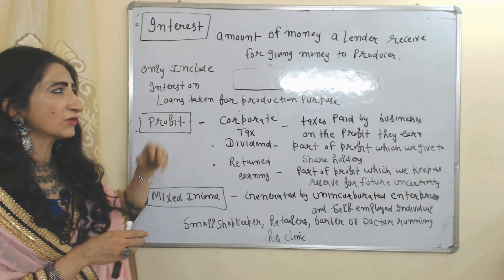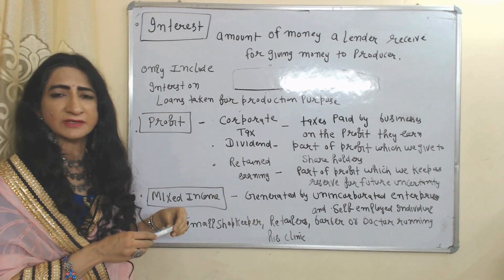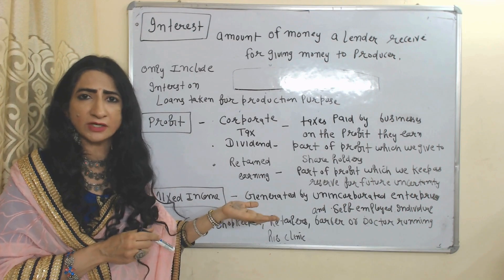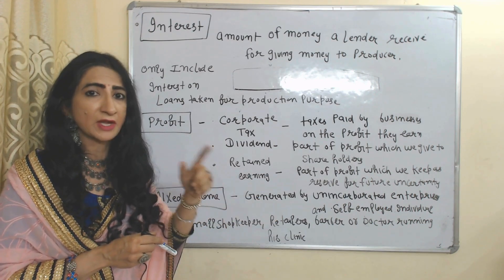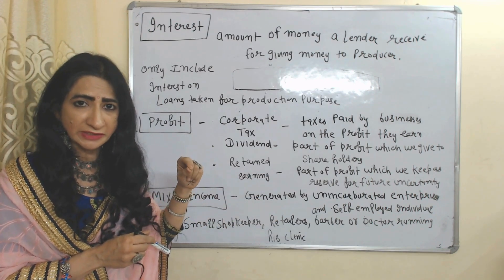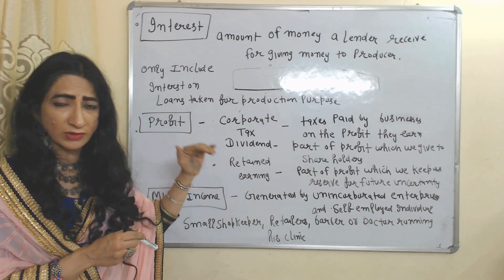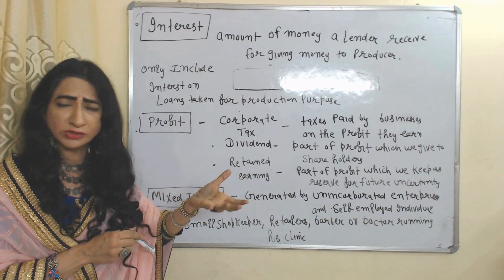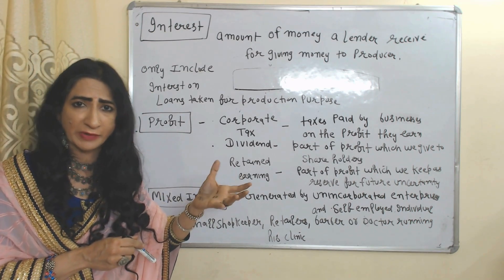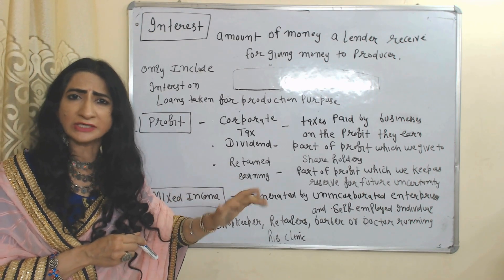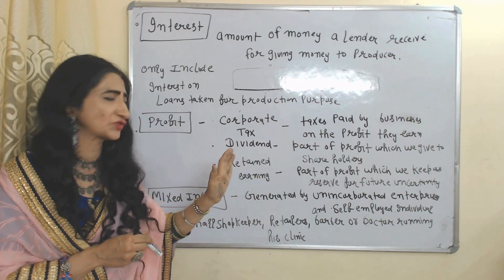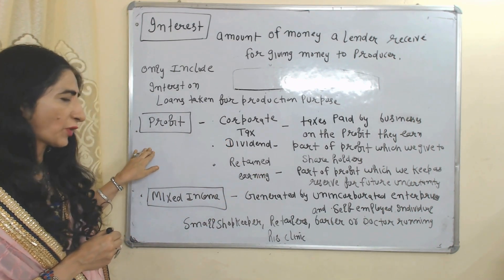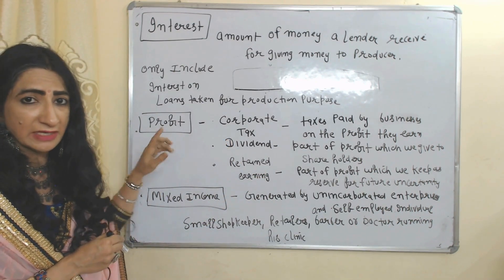The next component of factor income is interest. Interest is the amount of money which a lender receives for giving money to producers. An important point: we only include interest which is used for production purposes, not any other interest.